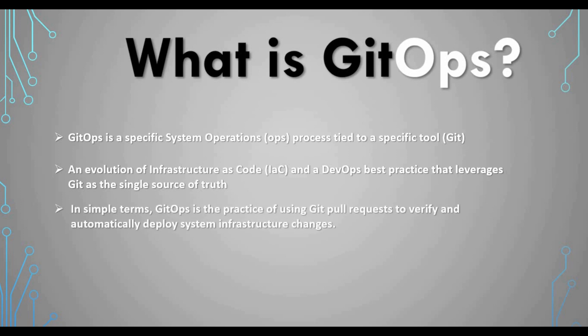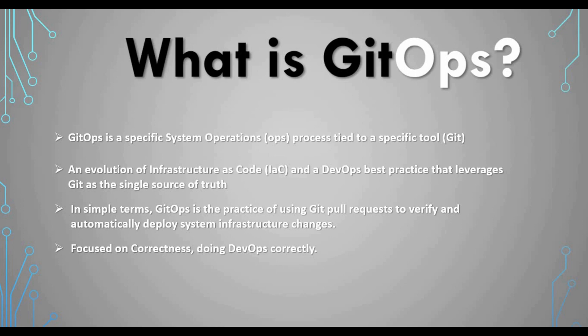In simple terms, GitOps is the practice of using Git pull requests to verify and automatically deploy your infrastructure changes. You have Git, you have a pull request, you have verification, and at the end you can automatically deploy your infrastructure — that is the overall GitOps concept. GitOps is mainly focused on correctness: doing DevOps correctly, making sure activities are focused and following the DevOps process properly, so that you end up with a proper infrastructure deployed.